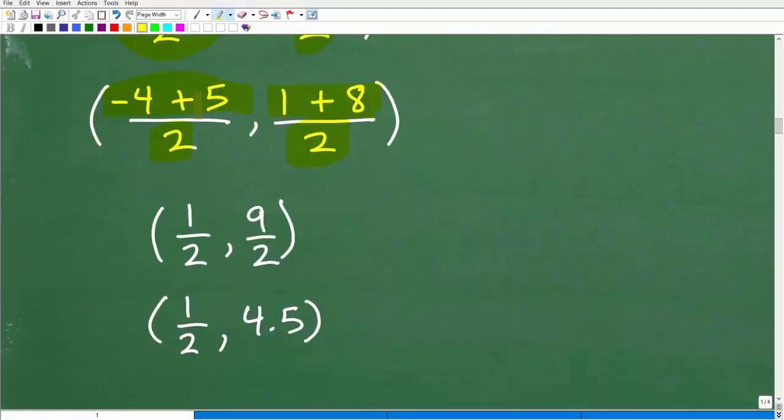We get negative 4 plus 5 is, of course, positive 1 or 1 half. Okay, it's our x coordinate. And then 1 plus 8 is going to be 9 over 2, 9 halves. And we can just think of this as a decimal. So we have 1 half or 0.5 and 4.5. Okay, so this is our XY value or XY ordered pair for the midpoint.